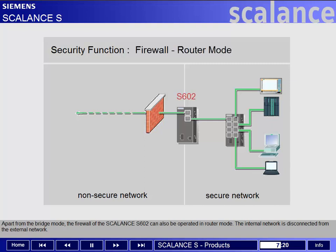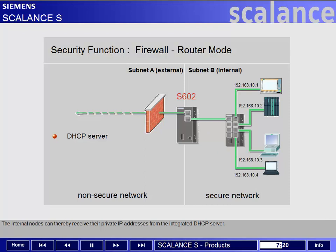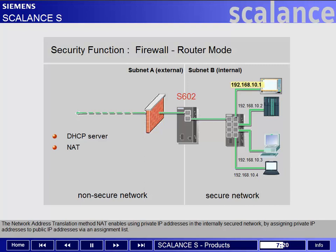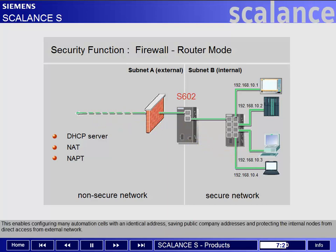The internal network is disconnected from the external network. The internal nodes can thereby receive their private IP addresses from the integrated DHCP server. The network address translation method, NAT, enables using private IP addresses in the internally secured network by assigning private IP addresses to public IP addresses via an assignment list. Conversely, the network address and port translation method, NAPT, enables addressing an internal private IP address in the secured network via the combination of the gateway address of the Scalance S602 and a communication port. This enables configuring many automation cells with an identical address, saving public company addresses and protecting the internal nodes from direct access from the external network.